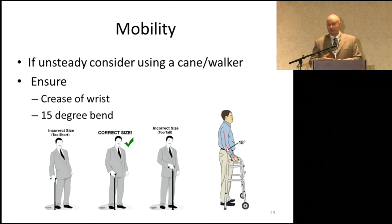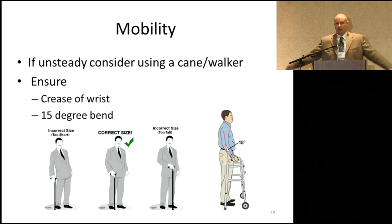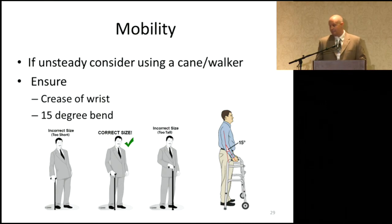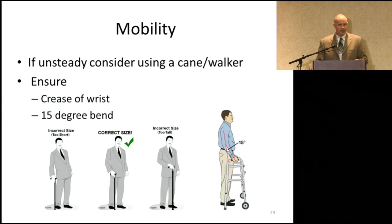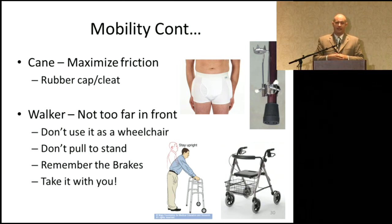Looking at mobility — if you're unsteady, consider using a cane, a walker, or potentially a wheelchair. If you use a cane or walker, make sure it's the right height. The handle of the cane should come across the crease of the wrist when your arms are at your side, giving approximately a 15-degree bend in your elbow. The same applies to a walker — handles at approximately wrist height for that 15-degree bend. When using the walker, make sure you're walking within the walker frame — not with the walker way out in front. If you trip, the walker won't do you much good unless it's quite close to you, with your feet near the back wheels.